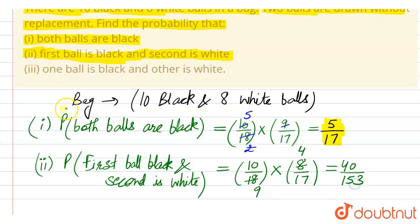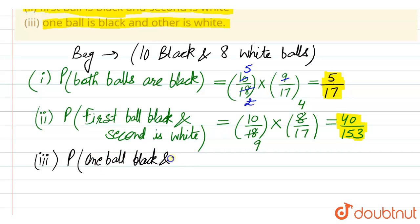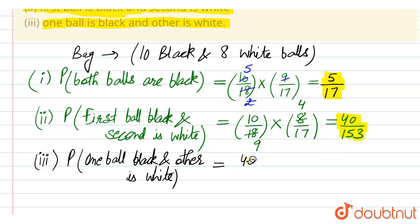Dividing by 2 gives 4 and 9, so this becomes 40 divided by 153. This is the probability for the second case — that the first ball is black and the second ball is white. For the third case, we need to find the probability that one ball is black and the other is white.